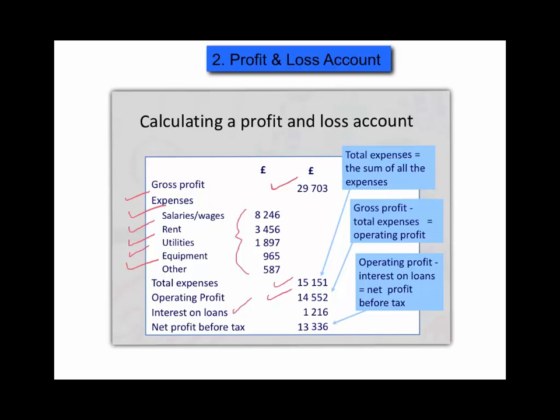That would leave us a net profit before tax of thirteen thousand three hundred and thirty-six pounds. That is the figure that the tax authority or the government will look at when they come to calculate how much tax you owe them.